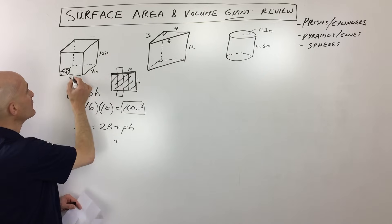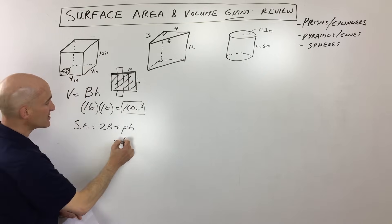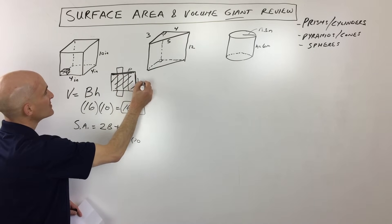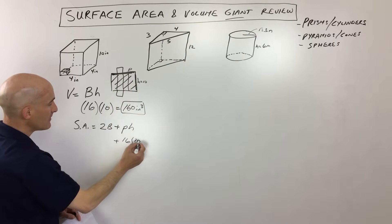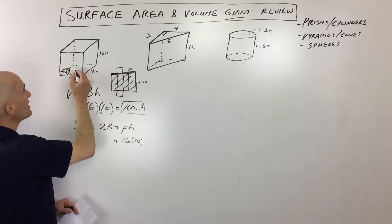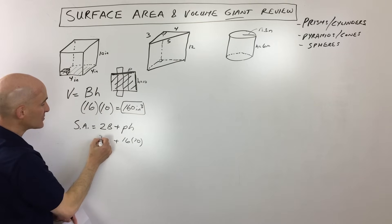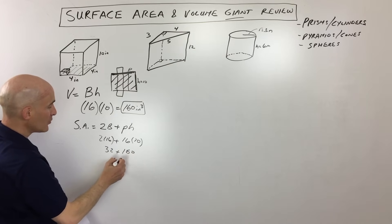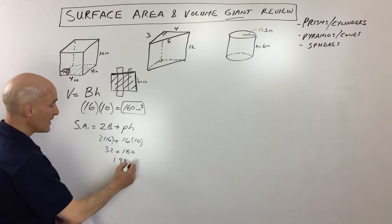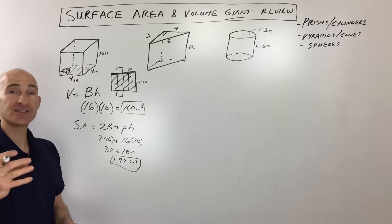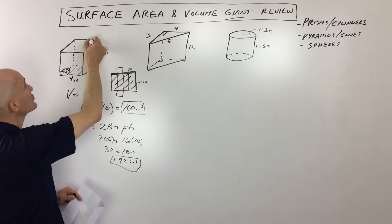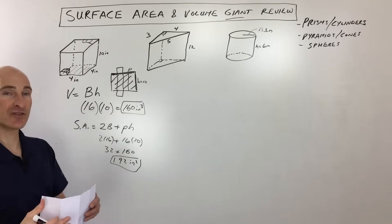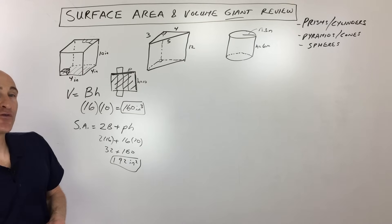So if we draw a net — an unfolded picture — you'd get four rectangles and a square on each end, like unfolding a shoebox. The perimeter is 4+4+4+4 = 16, times the height of 10, giving 160. Plus the two bases: 4×4 = 16, times 2 = 32. So 160 + 32 = 192 inches squared. It's square units because you're covering the surface with little one-by-one squares.